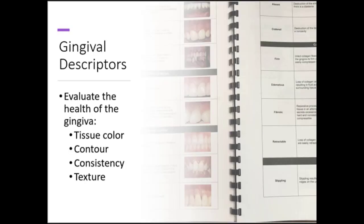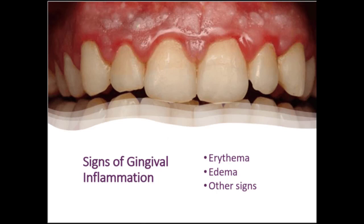The gingival description can give us clues toward whether the patient is healthy, has gingivitis, or has signs of periodontitis. When we evaluate the gingiva we're looking for tissue color, contour, consistency, and texture. In your clinic manual under hygiene assessments you will find gingival descriptors in each of these categories listed. Don't be shy to pull out that clinic manual or bring it up on your computer in clinic so that you can get the assessment correct.